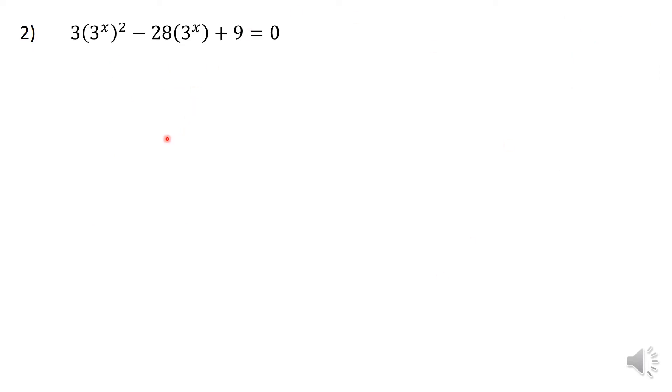The second one is quite straightforward. You can see there are 3^x. I can just let that be equal to some k, and then I have got 3k^2 - 28k + 9. Obviously, if I factorize it, you're going to get 3k(k - 9) - 1(k - 9). So obviously, the two answers are k = 1/3 or k = 9.